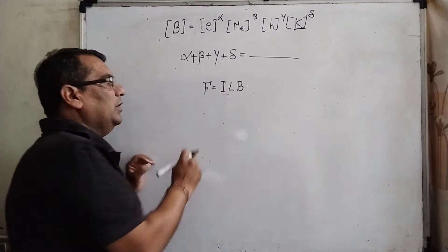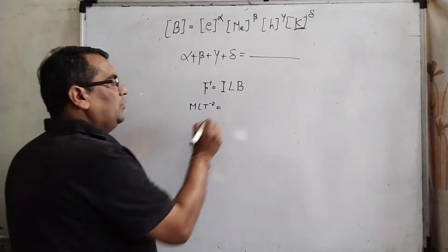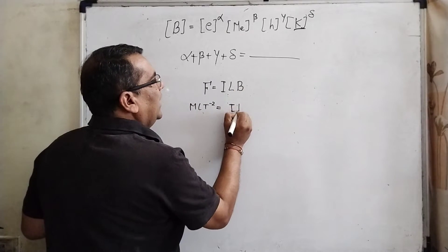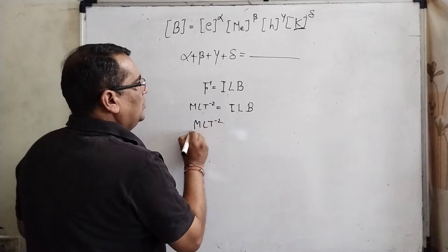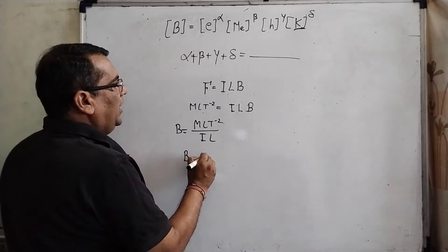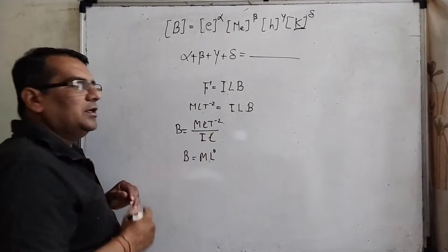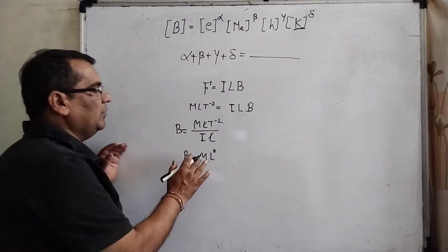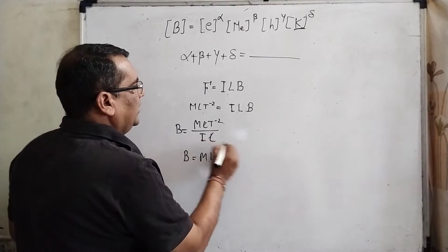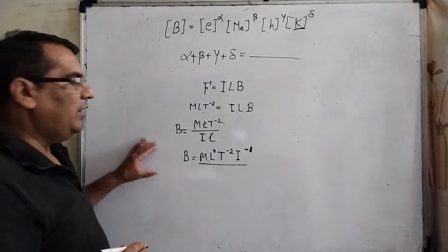Here B is magnetic field, I is current, L is length, and F is force. F has dimensions M L T⁻², I is a fundamental unit, L is also a fundamental unit. So [B] = M L T⁻² / (I × L), which gives M L⁰ T⁻² I⁻¹. It is easier to compare left-hand side and right-hand side dimension formulas, so we write L⁰ explicitly. The dimension of magnetic field is M L⁰ T⁻² I⁻¹.